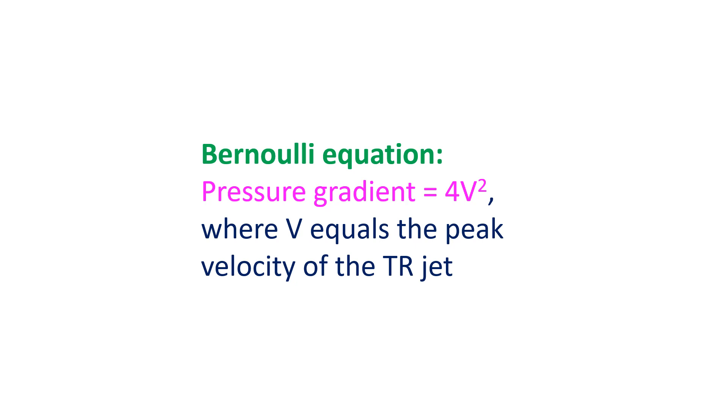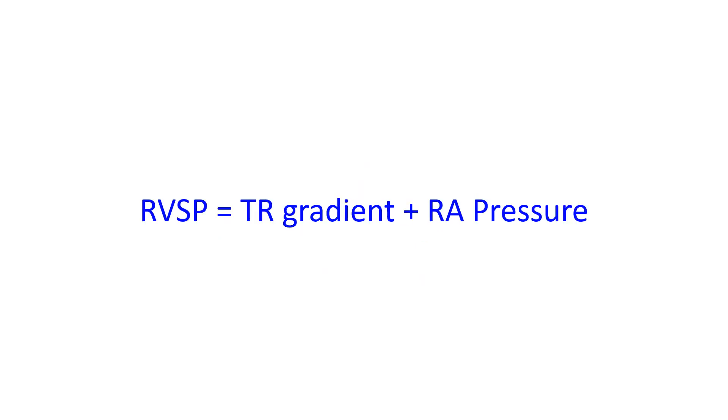This gives the pressure difference between the right atrium and right ventricle. RVSP is calculated from TR gradient by adding the presumed right atrial pressure, usually 10 mmHg.